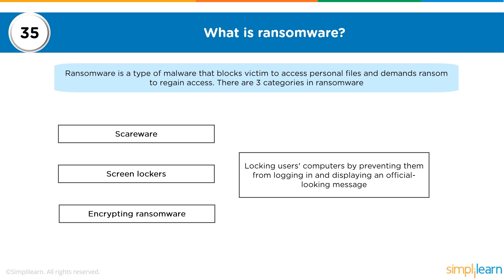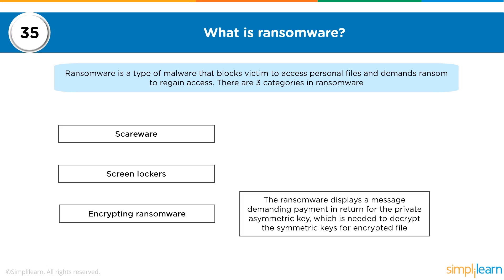With screen lockers, a warning states your data has been encrypted and instructs you to send bitcoins to a specified address to receive a decryption key. The third type is encrypting ransomware, which displays a message demanding payment in return for the private asymmetric key needed to decrypt the symmetric keys for the encrypted files. You may see a blank screen with instructions to pay a ransom in cryptocurrency to an untraceable digital wallet, after which the decryption key is provided.